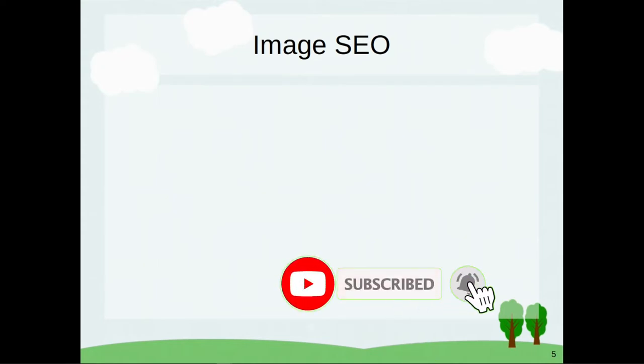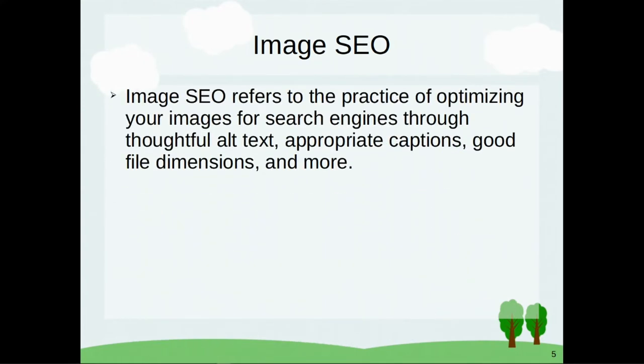Image search engine optimization refers to the practice of optimizing your images for search engines through alternative text, alt text, appropriate captions, file dimensions, and more — including the links you give in the image. This is what image SEO is all about.